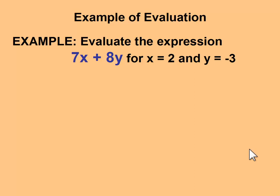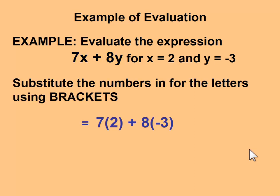In this case, we are going to evaluate the expression 7x plus 8y and replace x with 2 and y with negative 3. To substitute these numbers in for the letters, we must use brackets, indicating that it is 7 times x and now it becomes 7 times 2. 8 times y becomes 8 times negative 3.